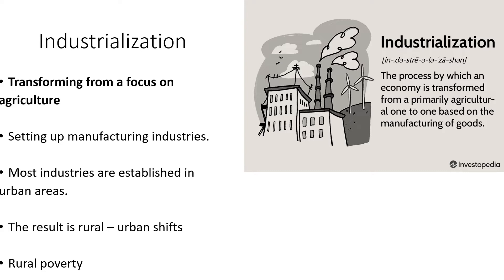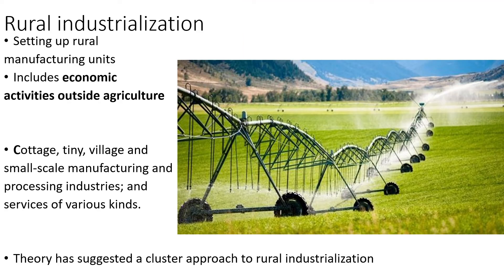The result is rural-urban shifts and eventually rural poverty. Rural industrialization is setting up rural manufacturing units. It includes economic activities outside agriculture, like the cottage, tiny village, and small-scale manufacturing, and the processing industries and services of various kinds. Rural industrialization balances development so that we don't have everything concentrated in the cities and urban areas.